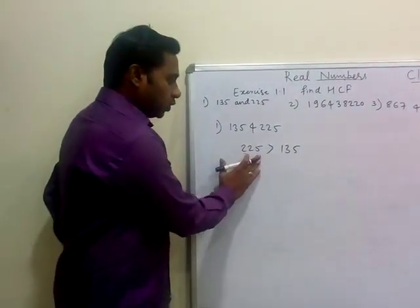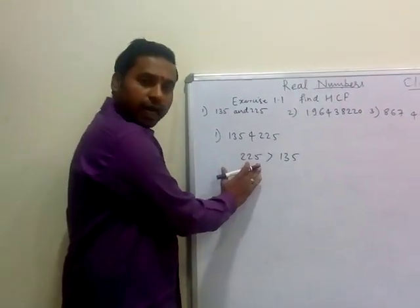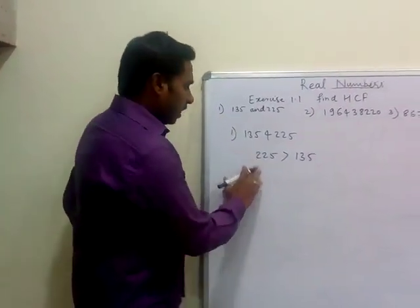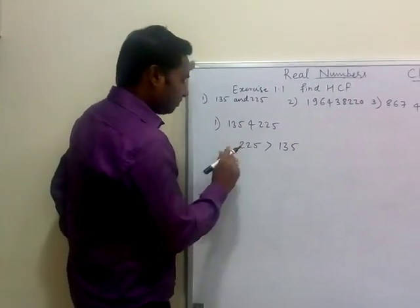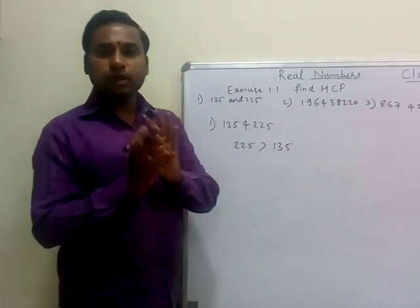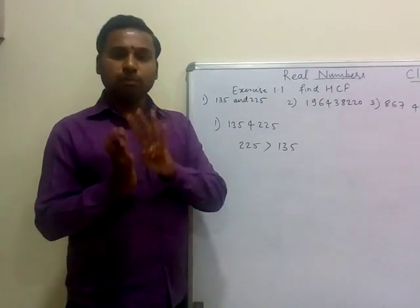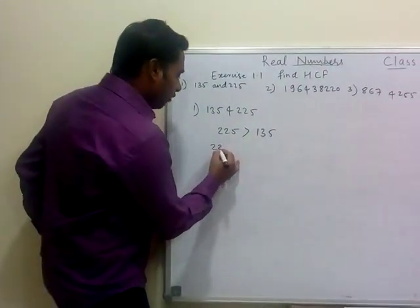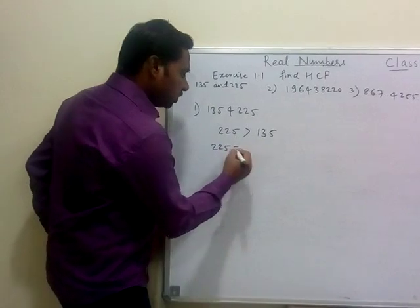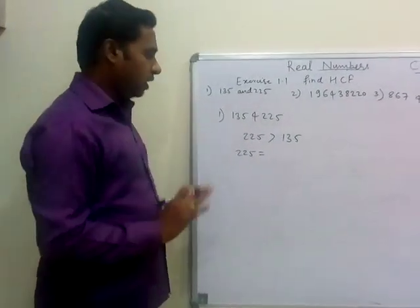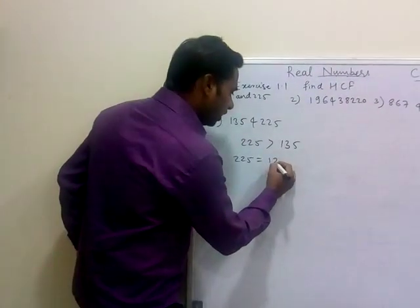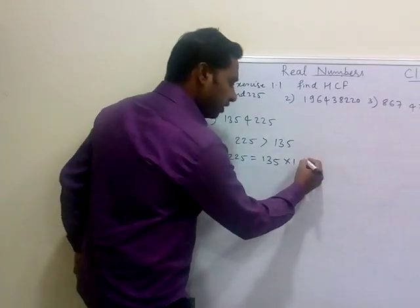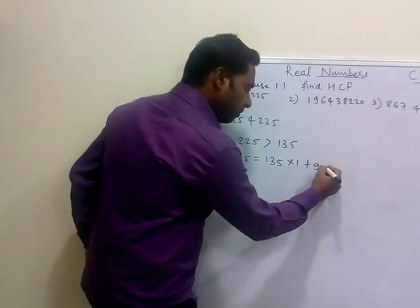So 225 is our A and 135 is our B. Now we write this in the dividend equals divisor into quotient plus remainder form. So when I divide 225 by 135, I get 135 × 1 = 135, and the remainder will be 90.